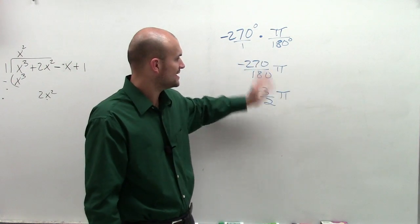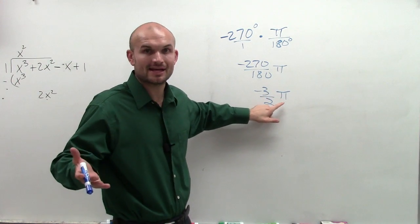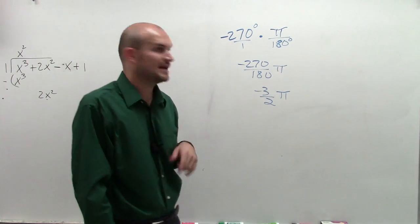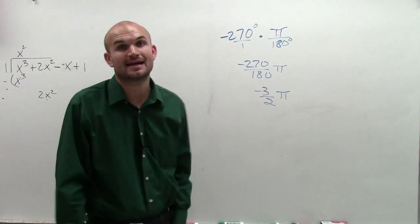As my degrees now cancel out, leaving me just with π, which means now my angle will be in my radian measurement. And I have reduced it down to negative 3 halves π is equivalent to negative 270 degrees.